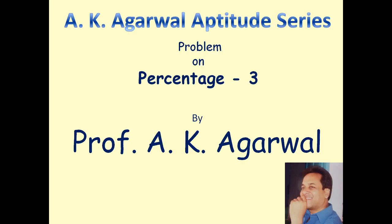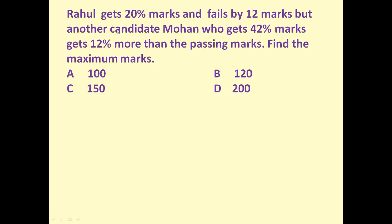Hello friends and welcome to AK Agrawal Aptitude Series. In this session we are going to learn a technique for solving a problem on percentage. The given problem is: Rahul gets 20 percent marks and fails by 12 marks, but another candidate Mohan who gets 42 percent marks gets 12 percent more than the passing marks. Find the maximum marks.